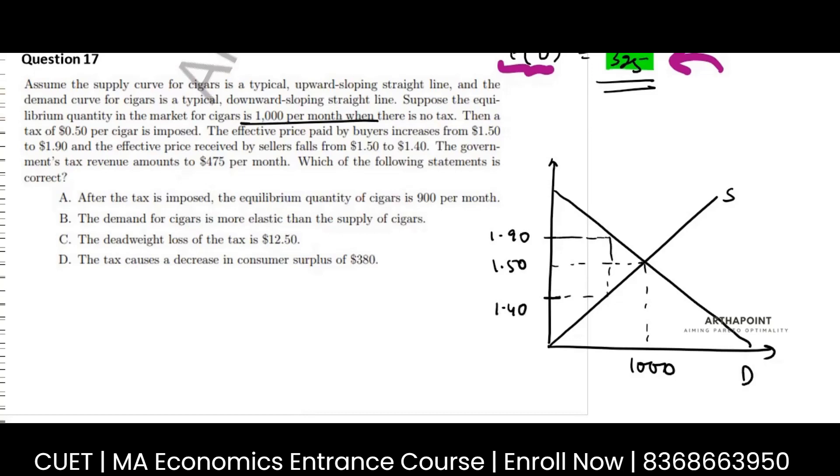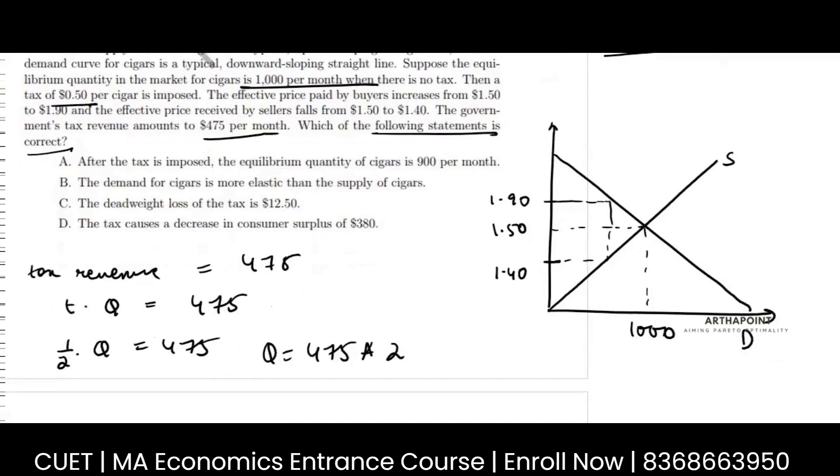And the government tax revenue is 475. Which of the following statement is correct? The tax revenue, this is 475, tax revenue is tax into quantity. This is 475, tax is 0.5, so half into quantity is 475. So quantity is 475 into 2. This is the new quantity that you will be selling.